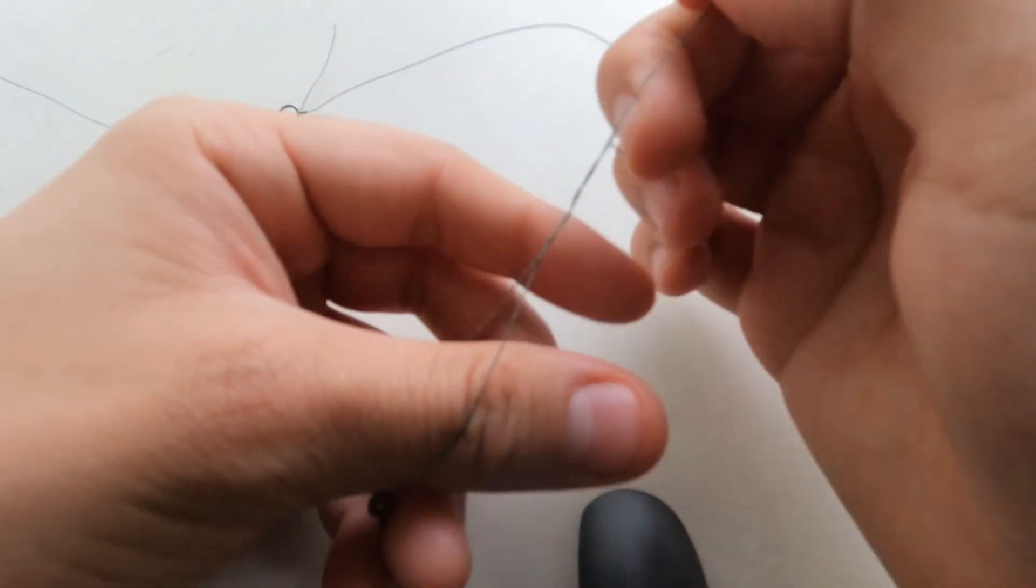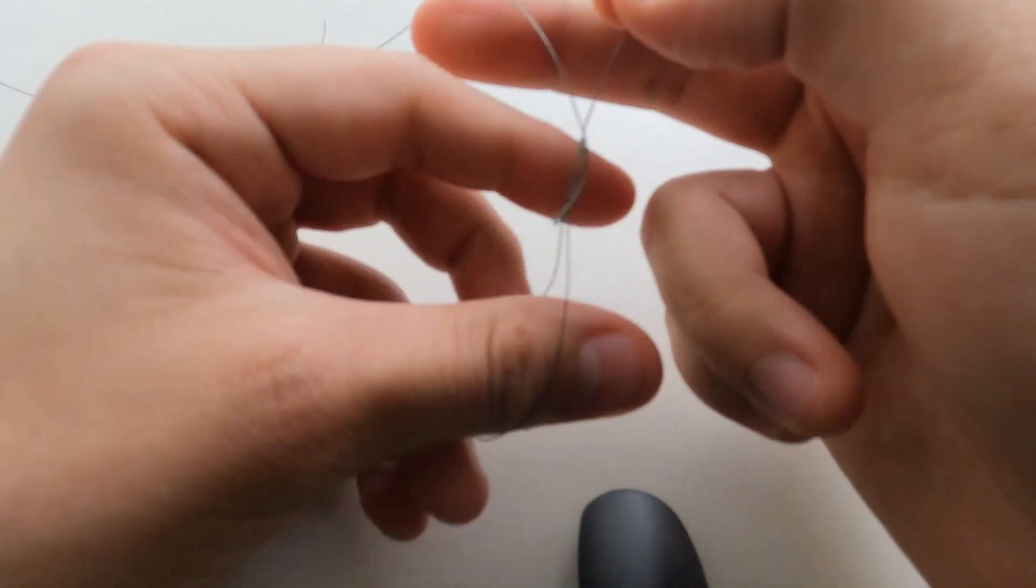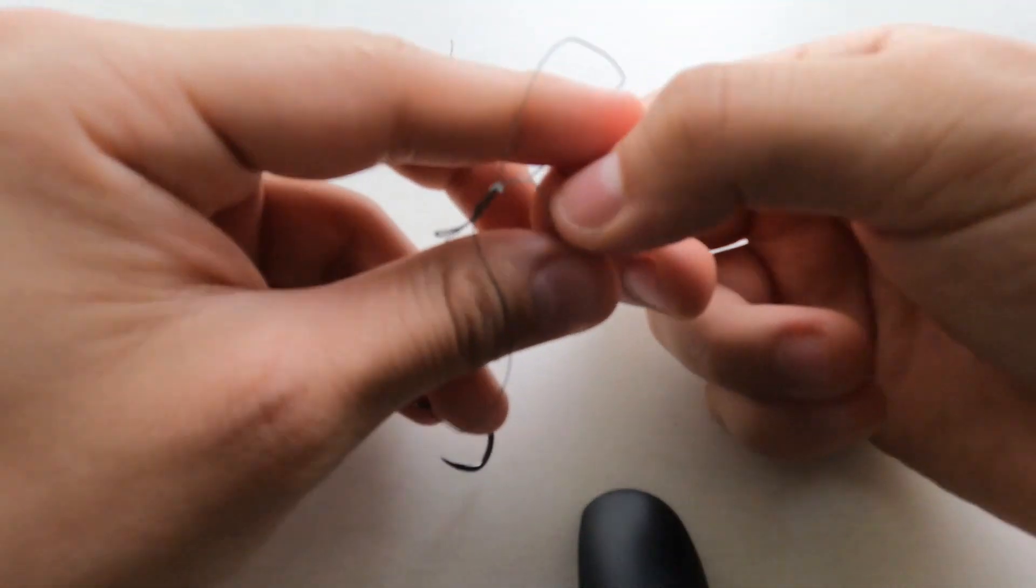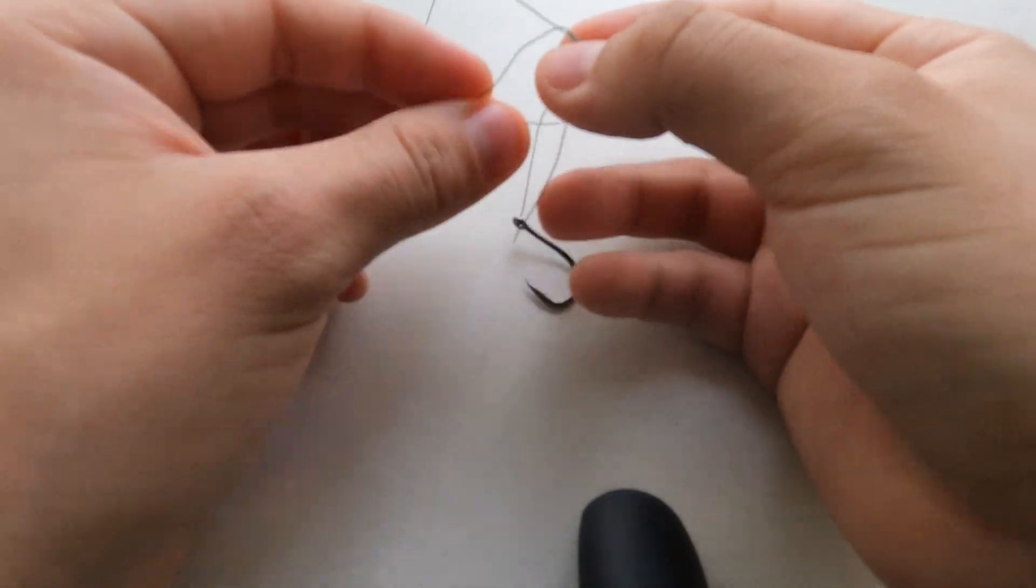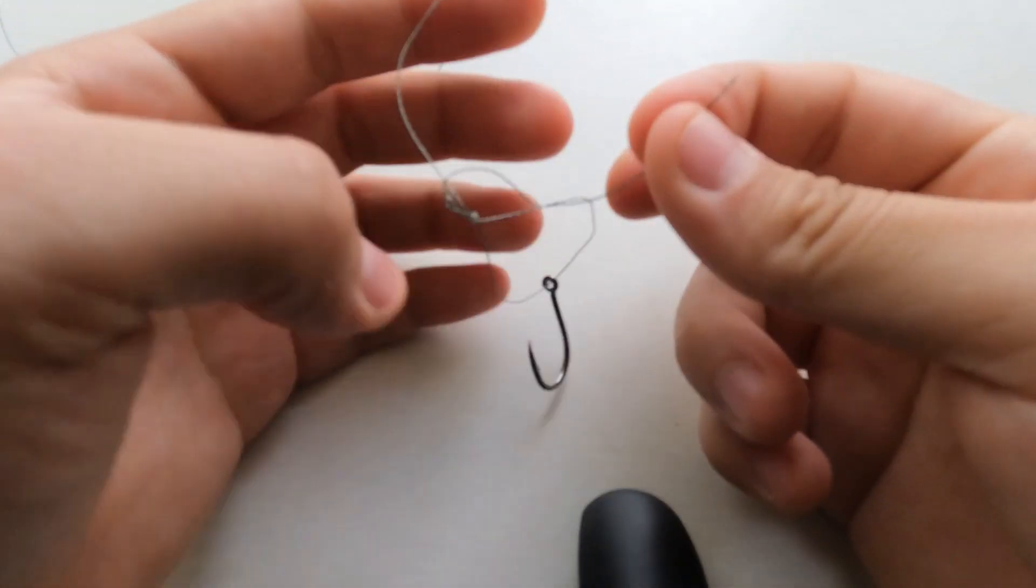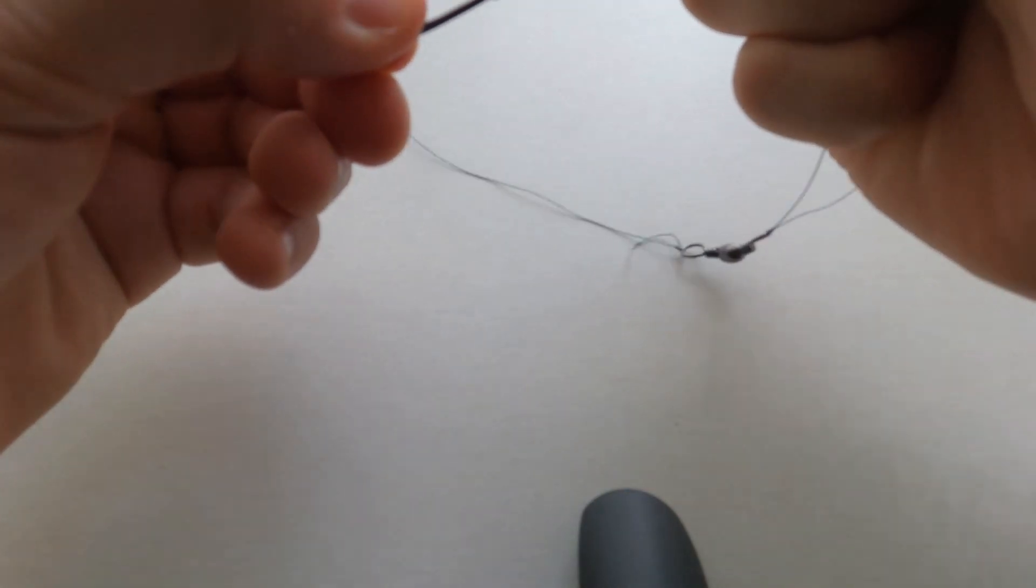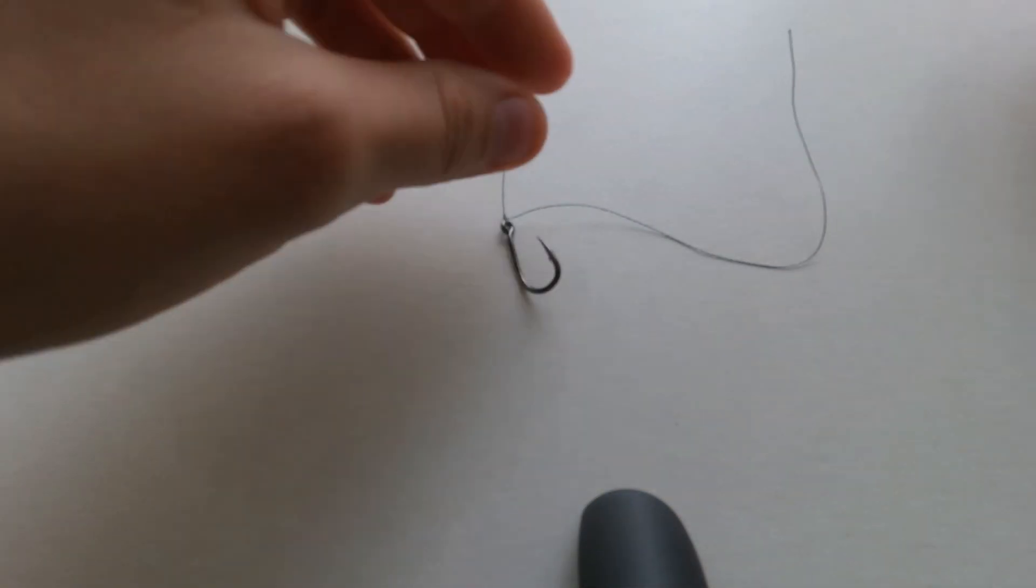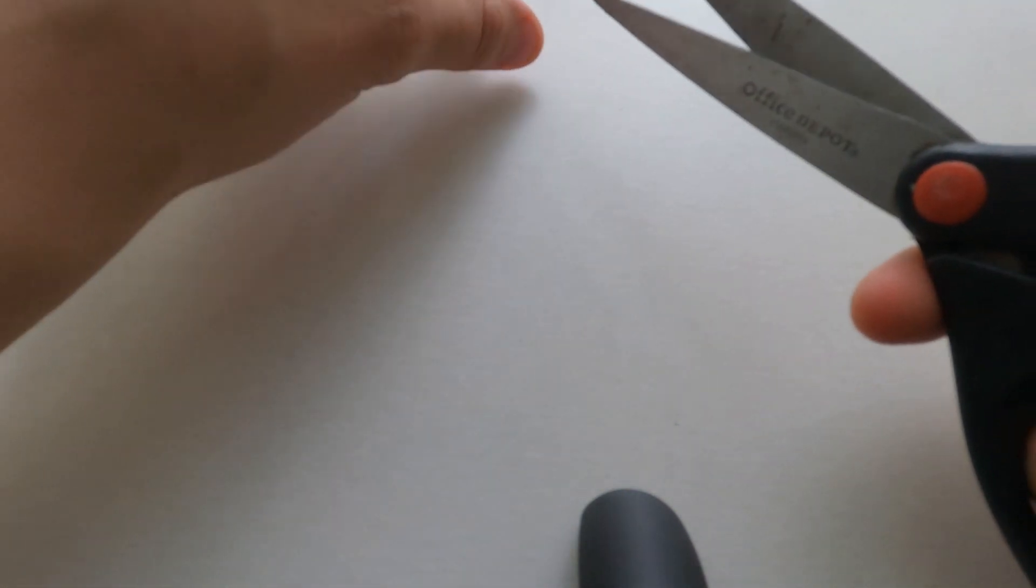Excuse me for my sausage fingers, I get that a lot. You know, can't do anything about that. Okay that's tied right there, looking good. We'll cut this, we'll cut the extra because this is too much extra line.